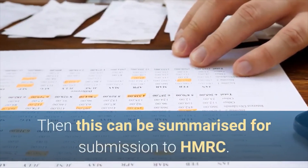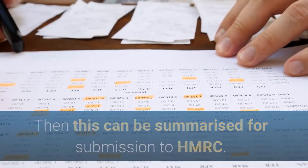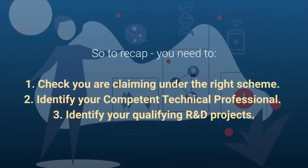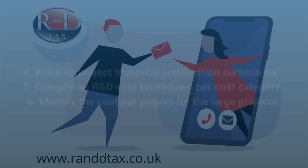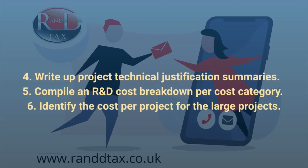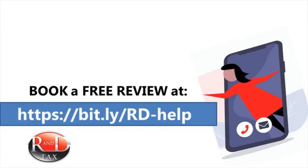So to recap, you need to: 1. Check you are claiming under the right scheme. 2. Identify your Competent Technical Professional. 3. Identify your qualifying R&D projects. 4. Write up project technical justification summaries. 5. Compile an R&D cost breakdown per cost category. 6. Identify the cost per project for the large projects.